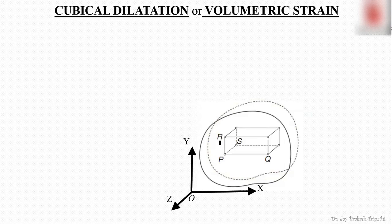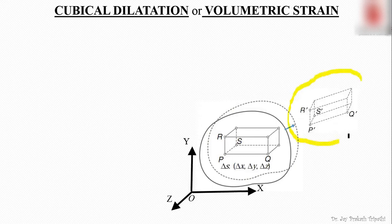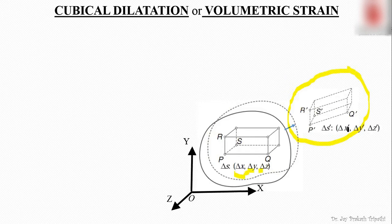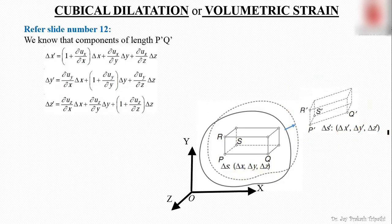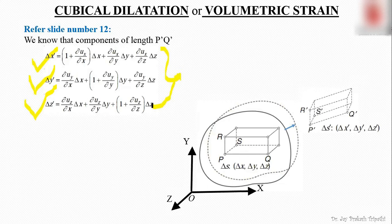Before deformation, this parallelepiped was denoted by the points P, Q, R, S and other points. After deformation it took a new shape, with new points represented by P', Q', R', and S'. Initially the sides of this parallelepiped were δx, δy, and δz, and after deformation they became δx', δy', and δz'. We will use these three expressions for deriving the expression of volumetric strain.